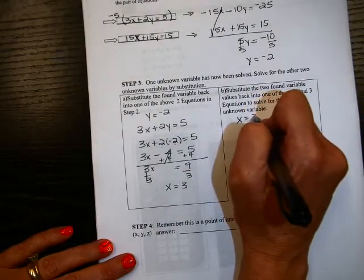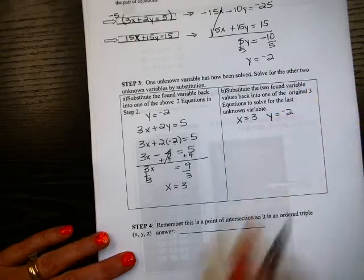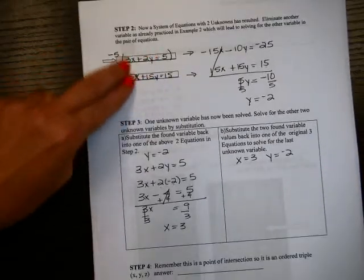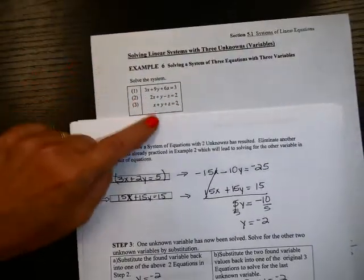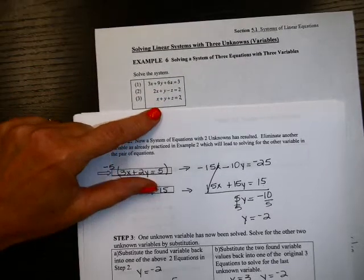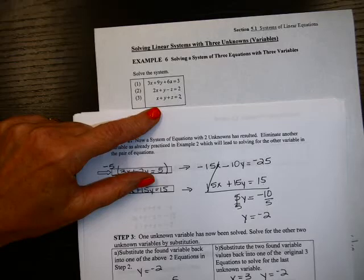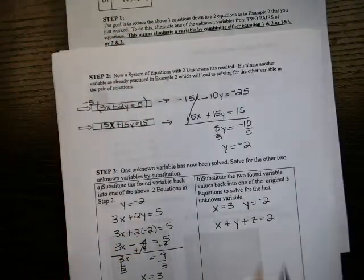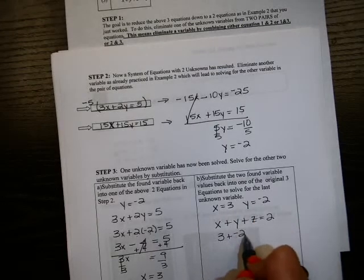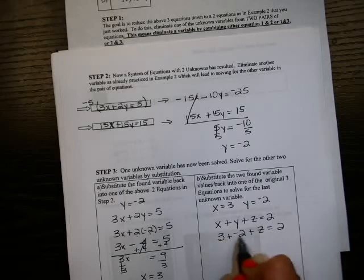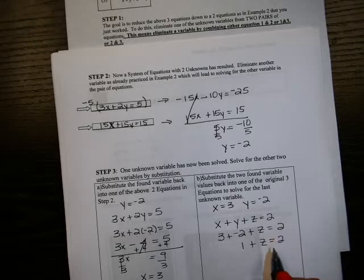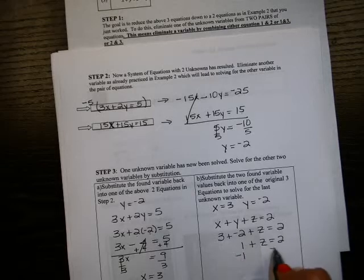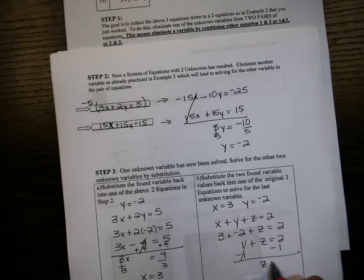So now I know that x is 3 and y is negative 2. All I have to solve for now is the z. And if you'll notice, you don't see a z in your system of 2. So we bump further back and go back to the originals. And I just choose one of the original equations. And I'm just going to choose this third one because it's x plus y plus z is 2. That looks easy enough to substitute back in here. My x is 3. My y is negative 2. 3 and negative 2 is 1. Keep working. Plus z is 2.